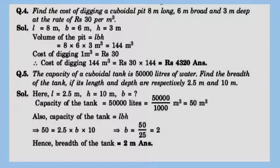Find the cost of digging a cuboidal pit 8 m long, 6 m broad, and 3 m deep at the rate of ₹30 per m³. First find the volume of the pit using V = l × b × h, then multiply by the rate to get the total cost of digging. The final answer is ₹4320.